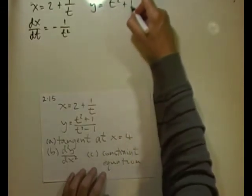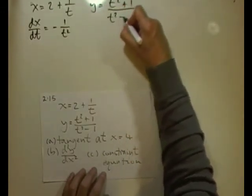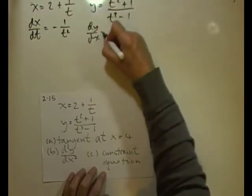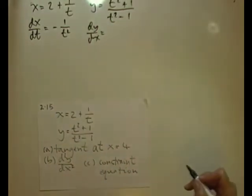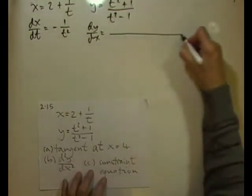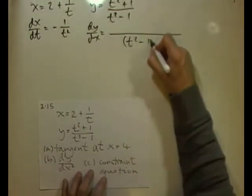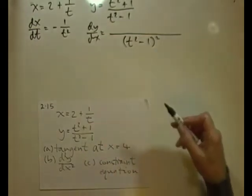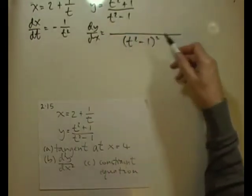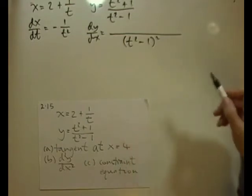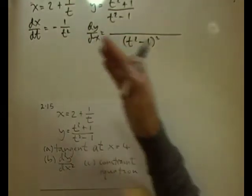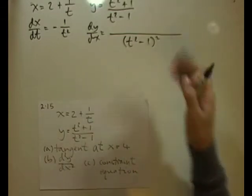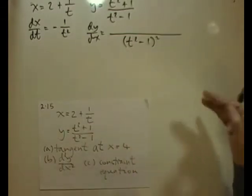For y equals (t² + 1)/(t² − 1), we need dy/dt, which is a quotient. We'll use the quotient rule — square the bottom and then proceed as with the product rule: differentiate the first term, leave the rest alone; then differentiate the second term, leave the rest alone; and so on.